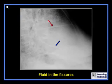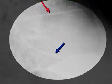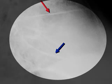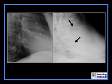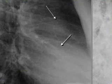This is an example of fluid in the fissures. The red arrow is pointing to fluid in the minor fissure, and the blue arrow to fluid in the major fissure — these are thicker than the point of a sharpened pencil. This is also an example of the same individual before fluid accumulates in the fissures, where they are visible but very thin, and then after the fluid accumulates, where the fissures are much thicker.